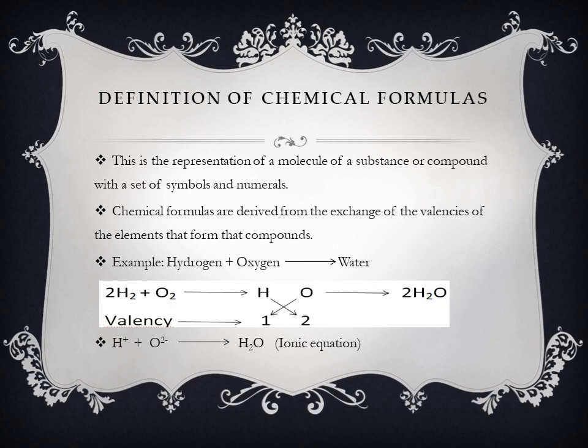Chemical formulas are the representation of a molecule of a substance or compound with a set of symbols and numerals. Chemical formulas are derived from the exchange of the valencies of the elements that form that compound. Valencies are the combining power of an element, so the valencies between two different elements are exchanged in order to form a compound.